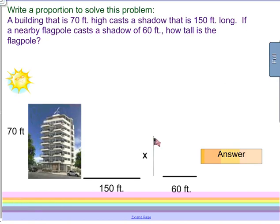Moving on from there, we have another example that we can work on. This example says, write a proportion to solve this problem. We have a building that is 70 feet high casts a shadow of 150 feet long. If a nearby flagpole casts a shadow of 60 feet, how tall is the flagpole? I'd actually like you to do this problem in your WISK tonight.